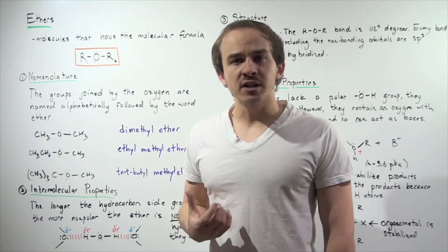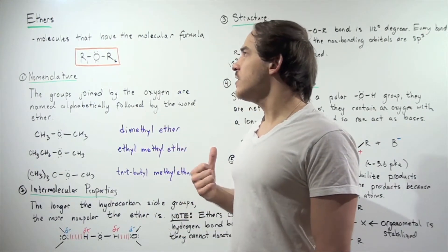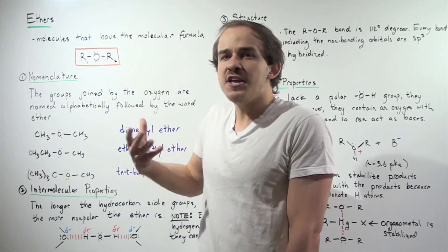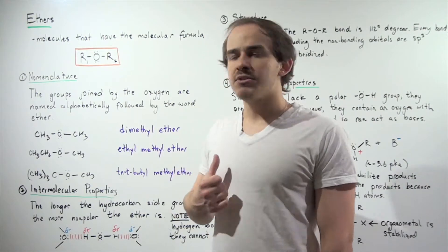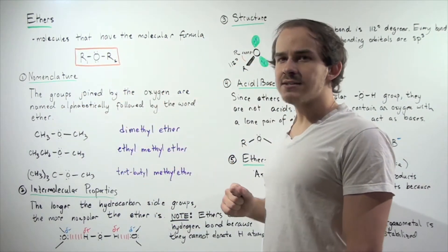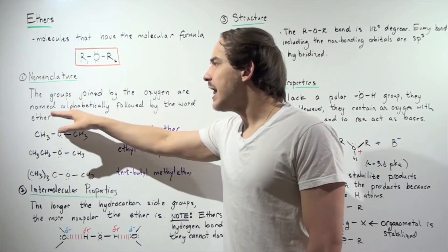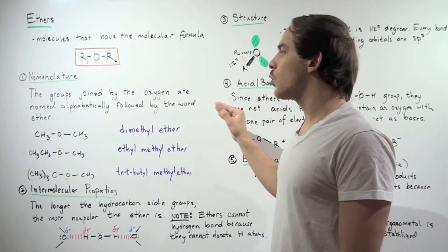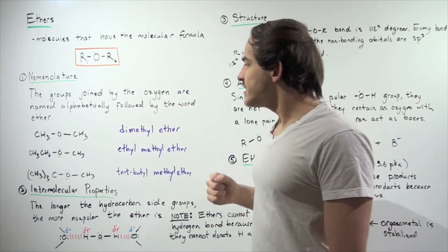First, let's discuss the nomenclature system for ethers. Whenever we have ether compounds, how do we name them? The groups joined by the oxygen, R1 and R2, are named alphabetically followed by the word ether. For example,